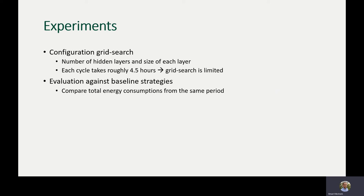First we are going to do a configuration grid search to find the optimal number of hidden layers and also the optimal size for each layer. Due to the communication latency and inefficiency between the simulation software and the reinforcement learning program, each train-and-validate cycle takes roughly four and a half hours, which limits our grid search resolution quite a bit. After this experiment, we will evaluate the best-performing agent against two different baseline strategies provided by the simulation software.